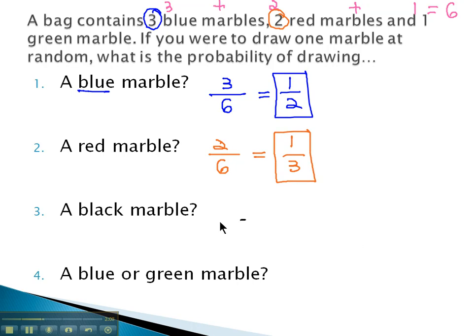How about a black marble? How many black marbles are possible? In this case, there are no black marbles described, and so there is a 0 out of 6, or simply a 0 chance representing that this event is impossible to occur.